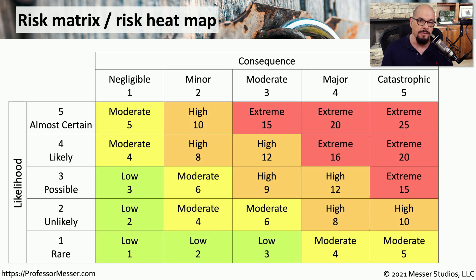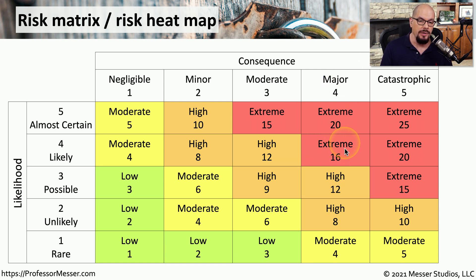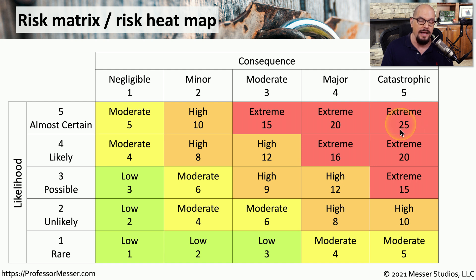There's not only a color component associated with this heat map, but there's also some quantitative values as well. If you were evaluating an event that was likely and the results of that event are major, then you would meet the extreme qualification, which is not only red but has 16 points associated with it. If this event was almost certain and had catastrophic consequences, it would also be extreme and marked red, but with a higher point value of 25.